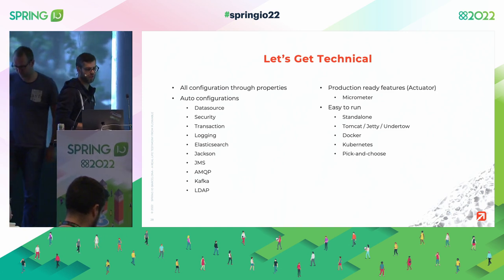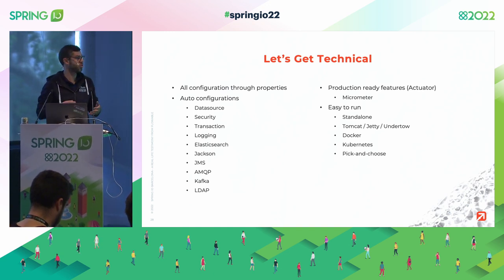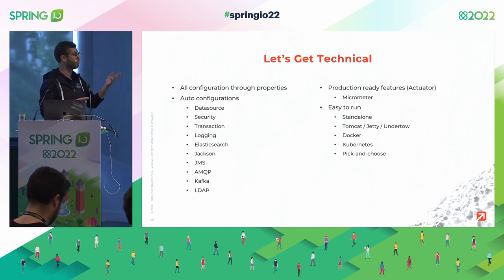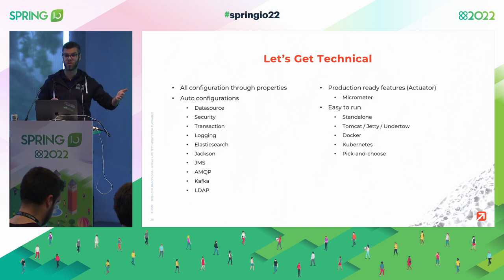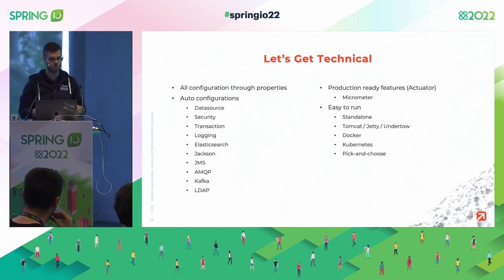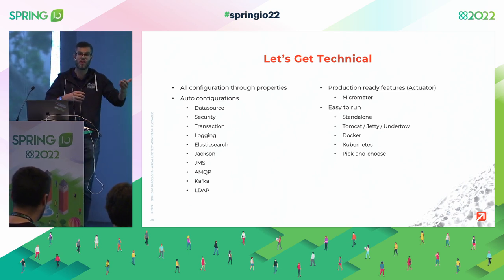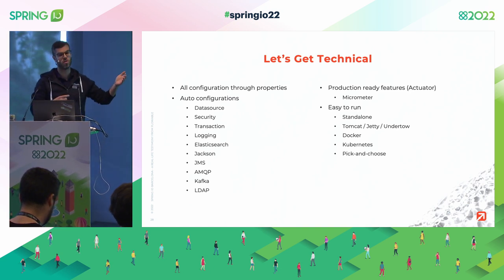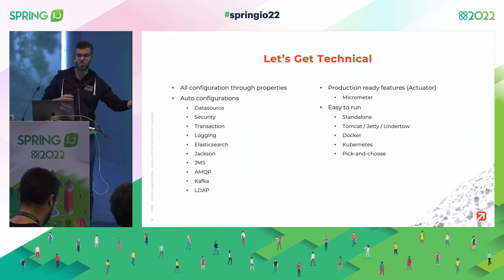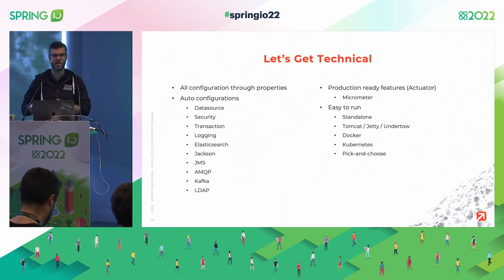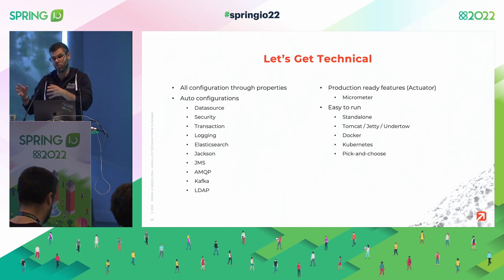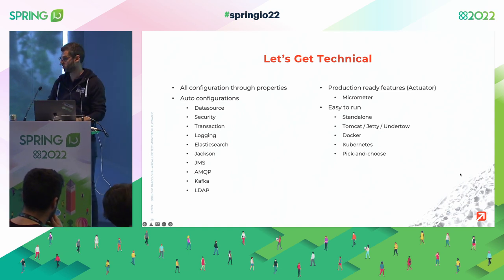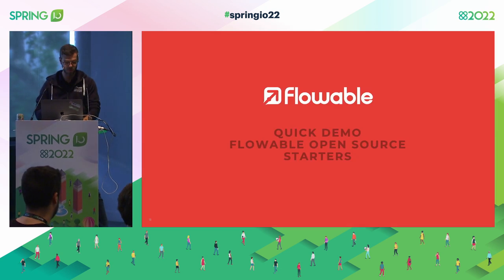Spring is an opinionated framework that configures a lot of things for you, and we benefit from what Spring Boot configures: the data source, security, transaction management, logging, and third-party integrations like Elasticsearch, Jackson, JMS, and so on. We use all these auto-configurations which are already pre-configured and really easily customizable by Spring Boot. It also has additional APIs that allow you to customize those for your needs — for example, if you need to change the data source, you can easily do that. We also use a lot of the production-ready features from the Actuator, such as Micrometer to publish our metrics.